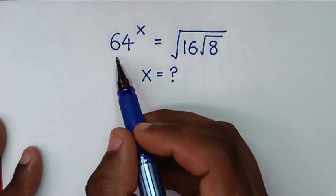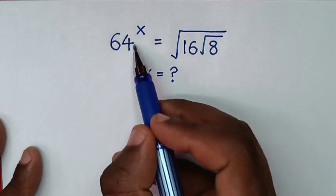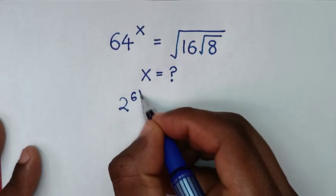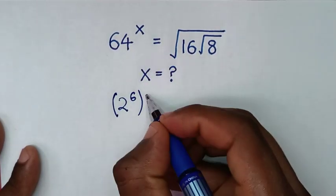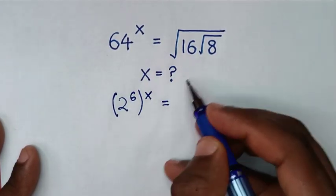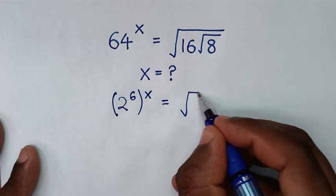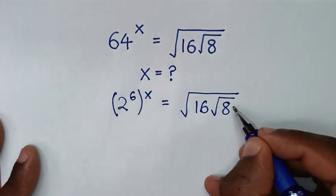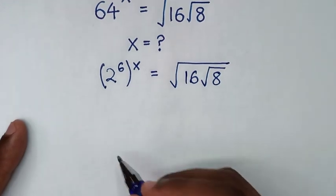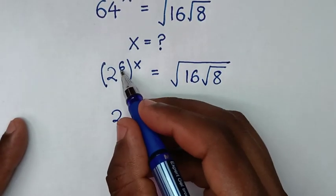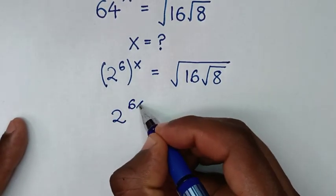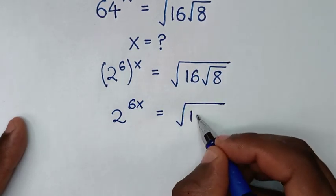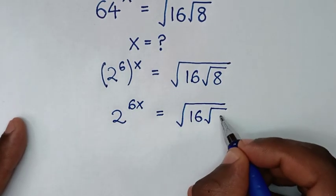In the first step, we change 64 into exponent form. 64 is the same as 2 power of 6, so it becomes (2^6)^x, which gives us 2 power of 6x, equal to the square root of 16 under the square root of 8.